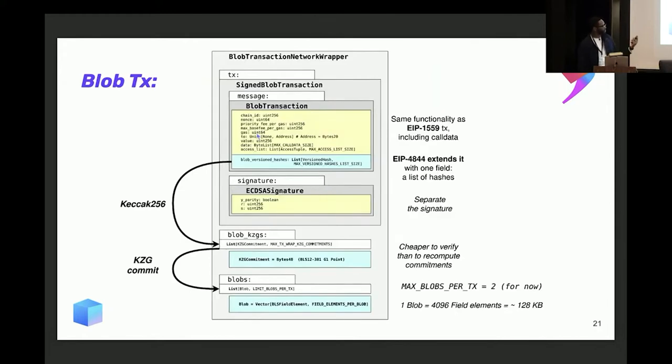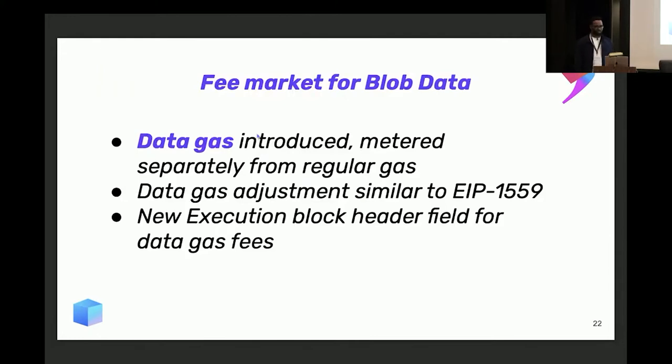A blob is basically a set of 4098 field elements. These field elements are basically just points on a BLS curve, in particular for this EIP, BLS12-381, which means the total size of a blob is 128 kilobytes. So with a single blob transaction, you can store 128 kilobytes that's completely separate from call data. And it does not get added to the EVM, but only exists in the beacon chain.